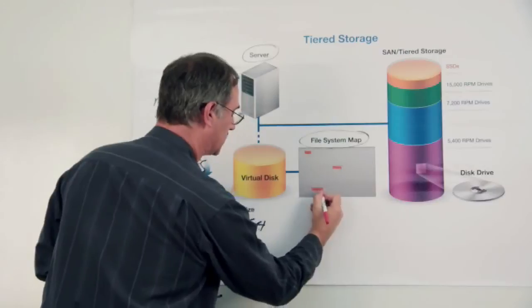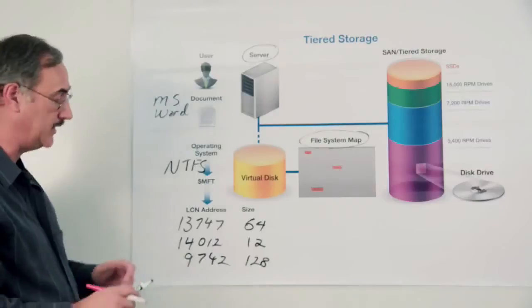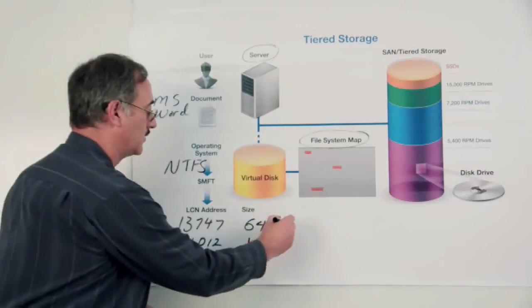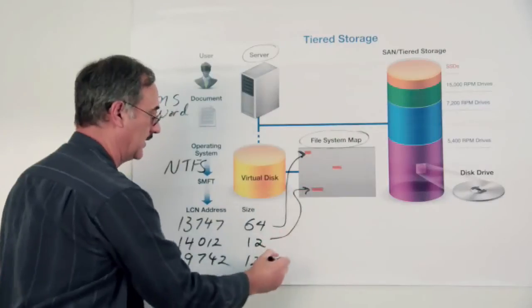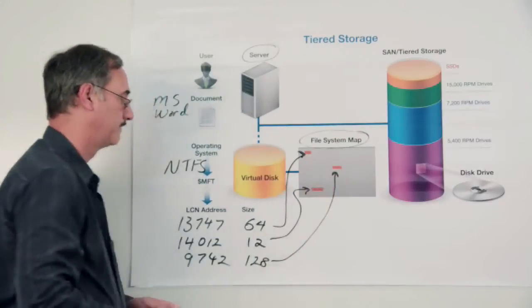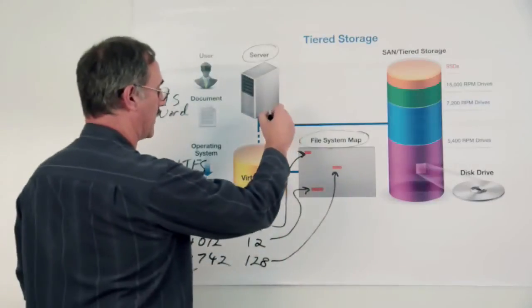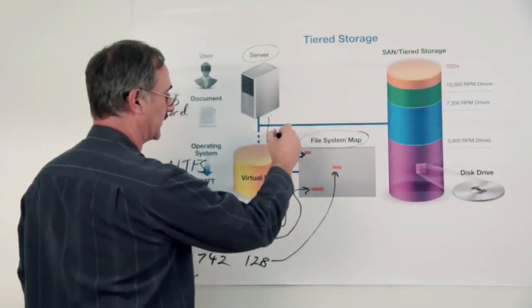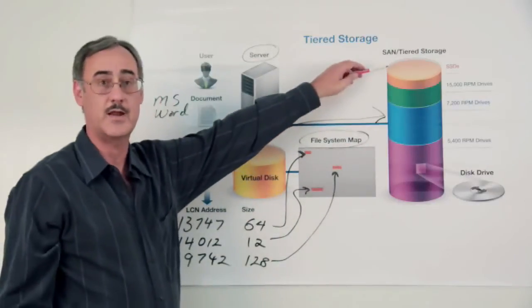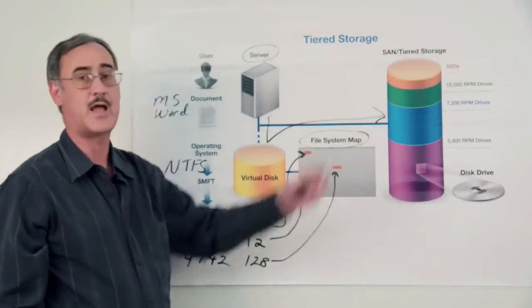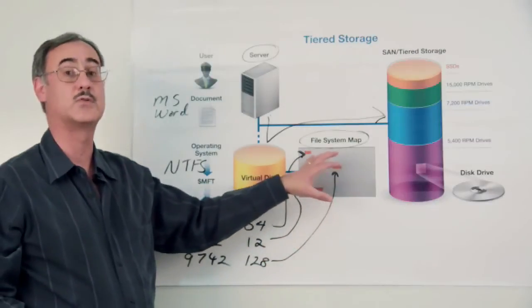So each of these IO requests, or I should say when accessing this file, each of these pieces then have to map to a particular location within Windows to find that data, to issue a separate individual IO request from the computer, from this virtual disk, out to the SAN storage, and then let the SAN storage try to pick out which type of media best handles the frequency of those IO requests.